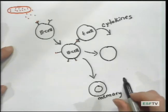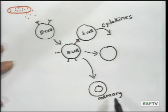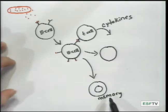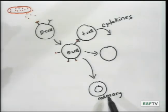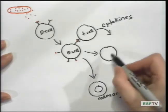And remember that memory cells remain in the body, and they're very long-lived. And if they encounter these antigens again, they can very quickly respond and rapidly multiply in order to produce additional plasma cells.